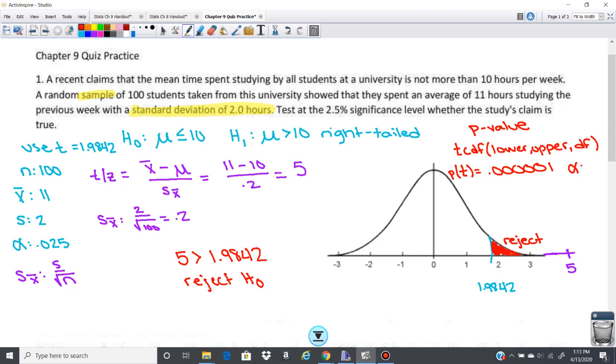If I compare that to the alpha, so my alpha, my significance level is 0.025. That is less. So when your p is less than your alpha, you will reject. If p is greater than alpha, you fail to reject. So this is a reject the null hypothesis using the p-value approach.